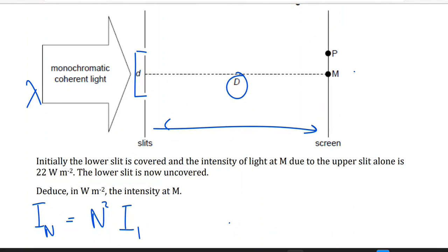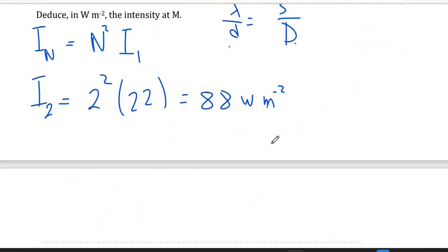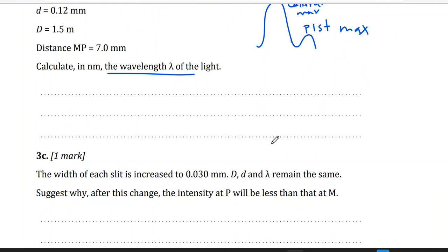And here we will have bright fringes, and then dark, and then bright, and then dark. So the distance between the center of two bright fringes, this is s. So the formula we're going to use is lambda over d will equal s over capital D. Lambda over small d, distance between the two slits, will equal s divided by capital D.